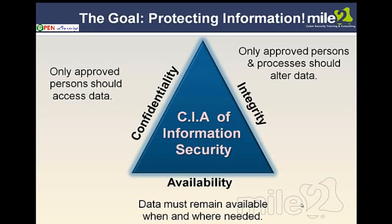Availability — we want our information to always be there, remaining available when and where we need it. We would not tolerate, if we're working with a particular bank, online banking saying, 'We're available some of the time, not other times.' That would be unacceptable. If we're going to put our money in a bank these days, where we expect to be able to purchase items any time of the night or day and use our debit card tied to our banking, we cannot tolerate being unavailable. So the CIA — confidentiality, integrity, availability — are highly critical.